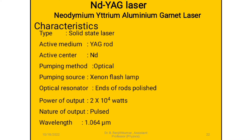Characteristics of a ND-YAG laser. Type: it is a doped insulator laser, or solid state laser. Active medium: Yttrium Aluminium Garnet rod. Active center: Neodymium. Pumping method: optical pumping. Pumping source: Xenon flash lamp.